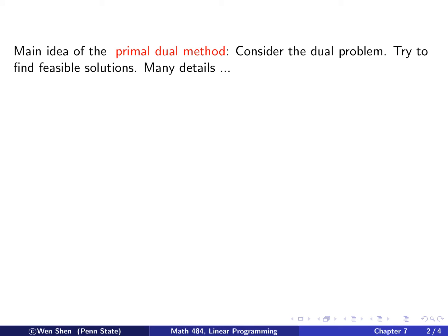We will introduce and explain a method called the primal-dual method. The main idea of this method is instead of solving the problem as it is, we use the duality theorem and consider the dual problem. For the dual problem, we will try to find feasible solutions. There are many details involved there.